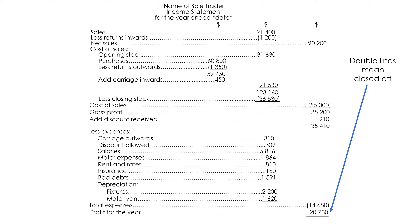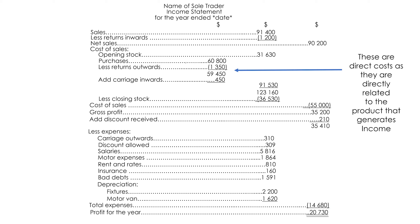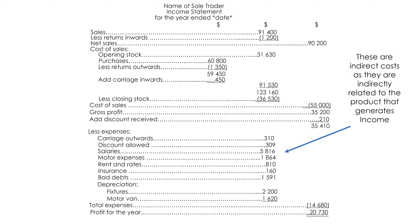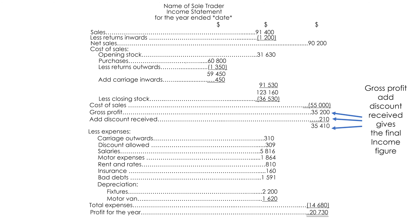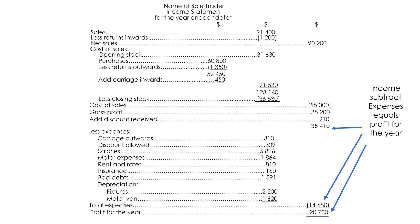Double lines mean closed off. These are direct costs as they are directly related to the product that generates income. These are indirect costs as they are indirectly related to the product that generates income. Income minus cost of sales equals gross profit. Gross profit plus discount received gives the final income figure. Income subtract expenses equals profit for the year.